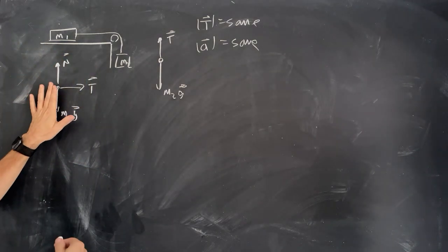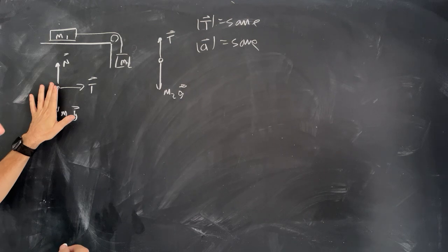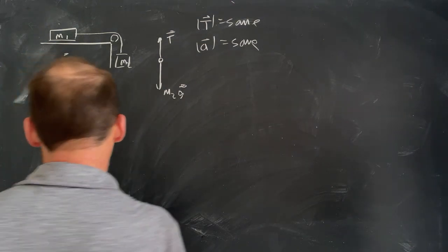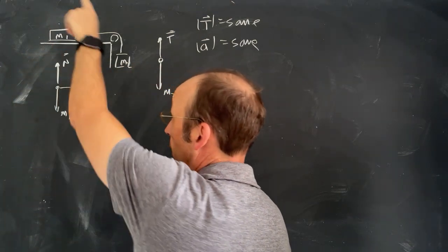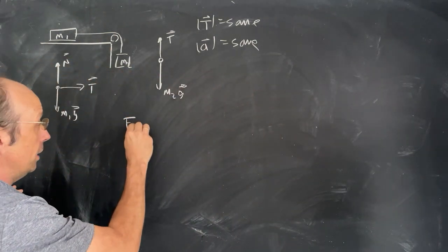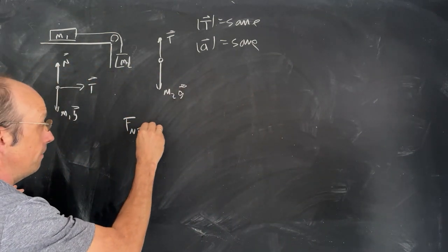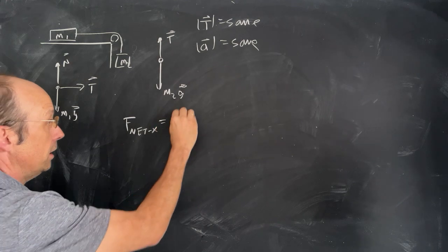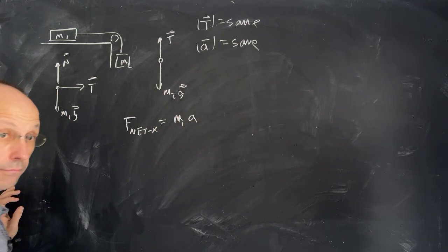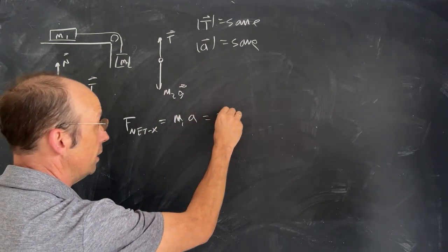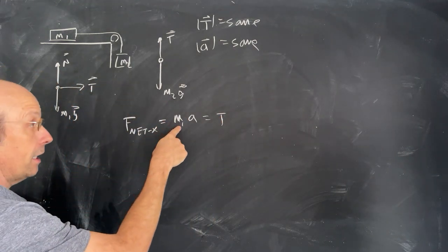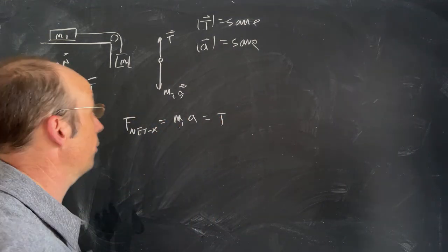If I look at just mass 1, I can write down Newton's second law. In the y direction, there's nothing going on because it's obviously not accelerating that way. In the x direction, F_net equals mass times acceleration, and that equals the tension T. So tension equals M1 times acceleration.